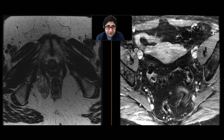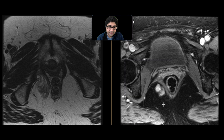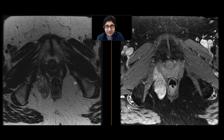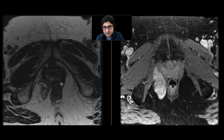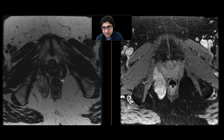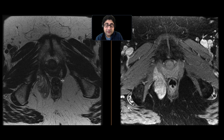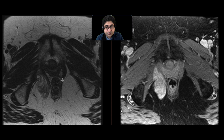Now, in and of itself, this is a sort of nonspecific finding, though one of the things that can give an appearance like this is a very rare tumor called aggressive angiomyxoma. This is a mesenchymal tumor that can occur more often in females and typically occurs in the perineum and the vulvovaginal region.